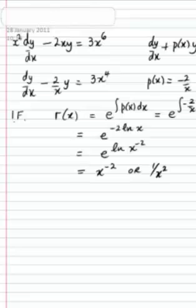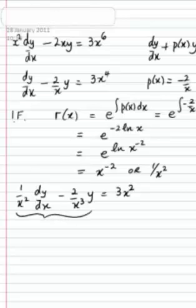We then take the standard form of our differential equation and we multiply it through by the integrating factor. So we'll get 1 over x squared dy dx minus 2 over x cubed y is 3x squared. We've multiplied through by the integrating factor. And the point of doing that is that the left-hand side, then, can always be written as the integrating factor multiplied by y.